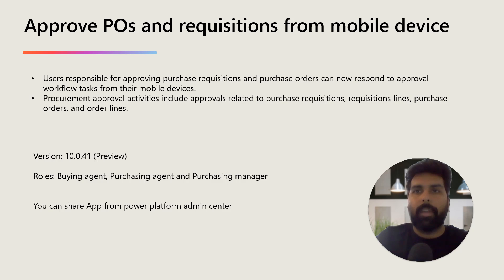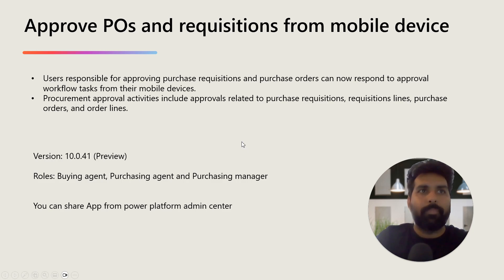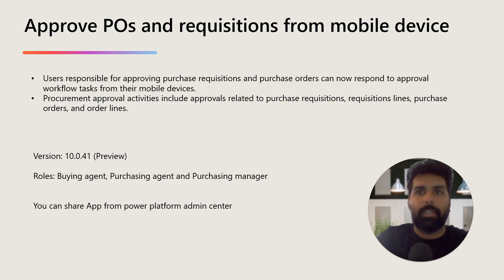Approvers need to review the transactions — orders and requisitions — submitted, and then approve them. But now with this mobile app, they can access all these approval requests through the mobile app and take appropriate action. This app is available as a preview feature as of version 10.0.41. The roles required are buying agent, purchasing agent, and purchasing manager.